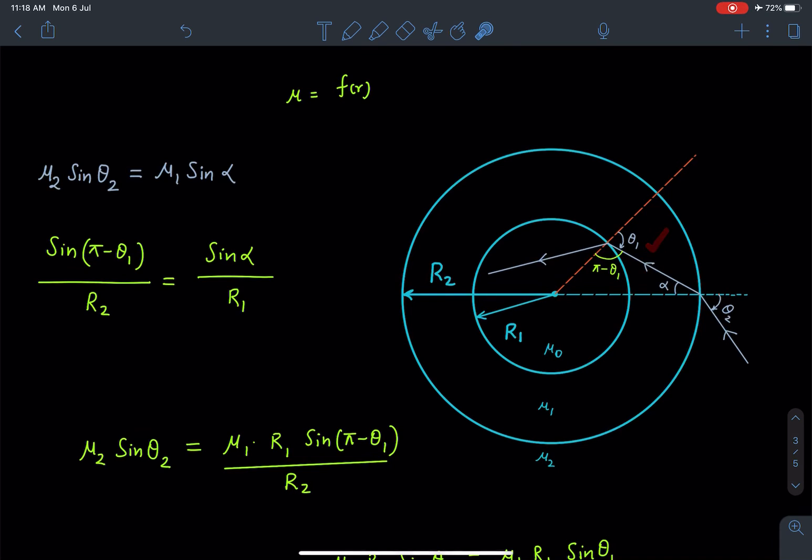The outside medium is μ₂ and from r₁ to r₂ the medium is μ₁. If this angle is θ₁, I can write this angle as π minus θ₁. This distance is r₂ and this distance is r₁.